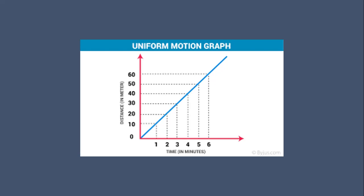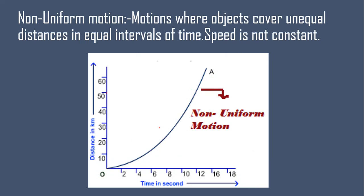Non-uniform motion is the opposite of uniform motion. It is motion where an object covers unequal distance in equal interval of time — that is, speed is not constant. Hum daily agar car chalate hain ya koi bhi vehicle chalate hain, woh non-uniform motion hota hai, because equal interval of time mein unequal distance travel hota hai — because of traffic, obstacles, red lights, and so on.